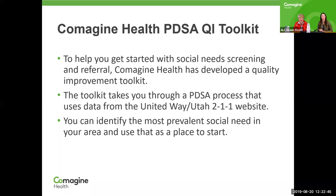We also want to tell you about our Comagine Health PDSA Quality Improvement Toolkit — Sarah Phillips has put that link in chat. To help you get started with your social needs screening, or if you're already doing it and want to improve, we've developed a quality improvement toolkit. This toolkit takes you through the PDSA process integral to quality improvement and uses data from the United Way 211 website. Through it, you'll be able to identify the most prevalent social need in your area and use that as a place to start.